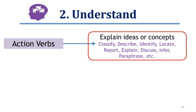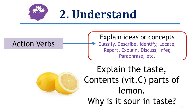Another lower order thinking domain is understand — developing the ability to grasp the meaning of information. Action verbs include classify, describe, identify, locate, report, explain, discuss, infer, paraphrase, and others. For example: explain the taste contents, i.e., vitamin C, in parts of a lemon and why it is sour in taste — which requires more knowledge than only remembering.